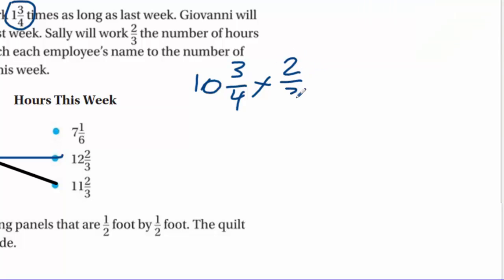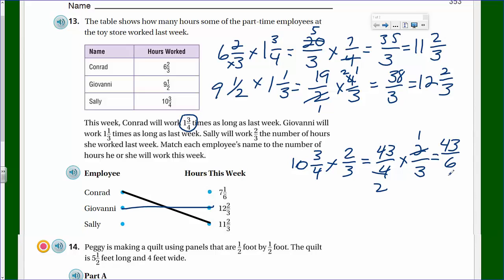We're going to put this as 43/4 times 2/3. I do see a common factor here, so we're going to have 43/6. 6 will go into 43 seven times. That's 42, so we end up with 42 with 1 left over. 7 and 1/6. And it is 7 and 1/6, so we know we're on the right track.